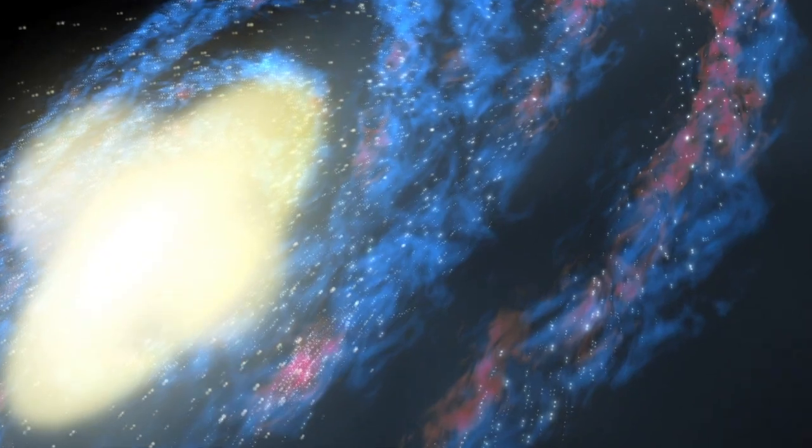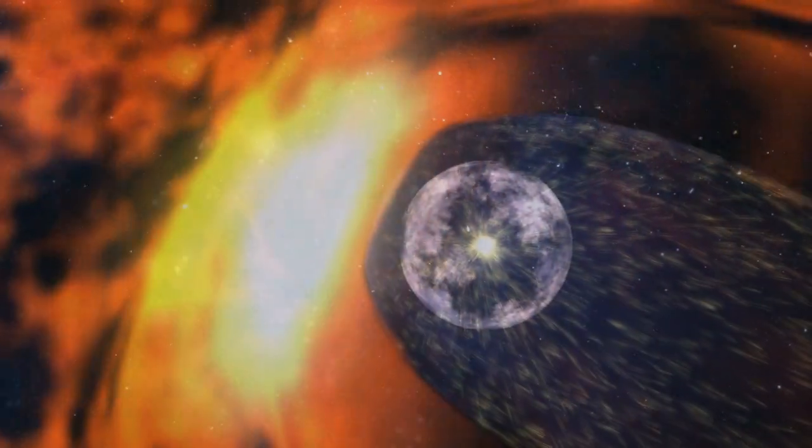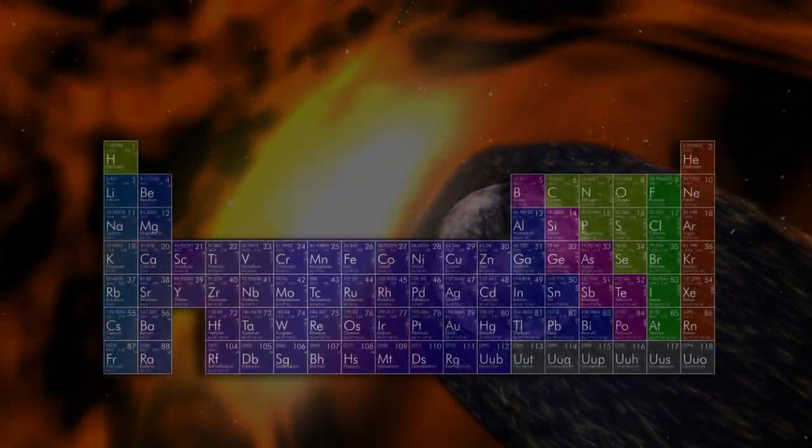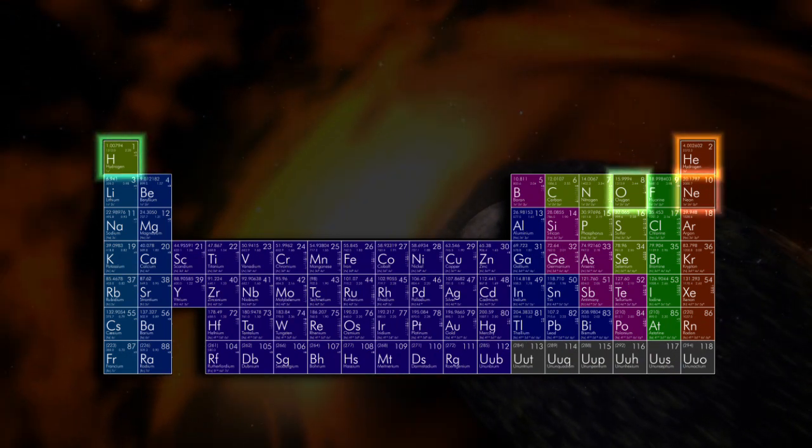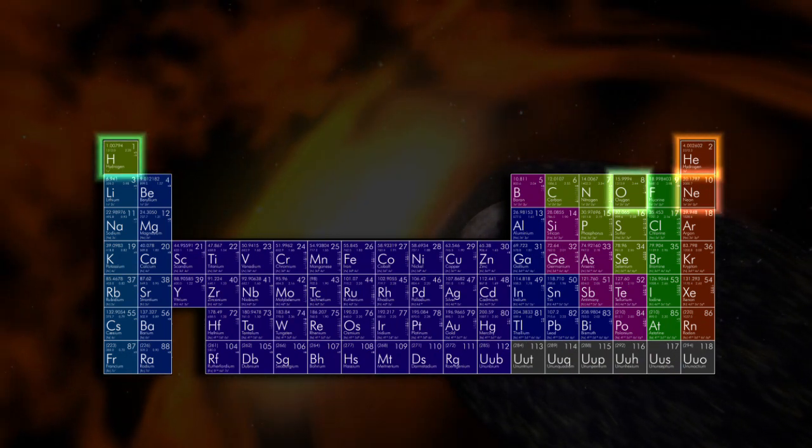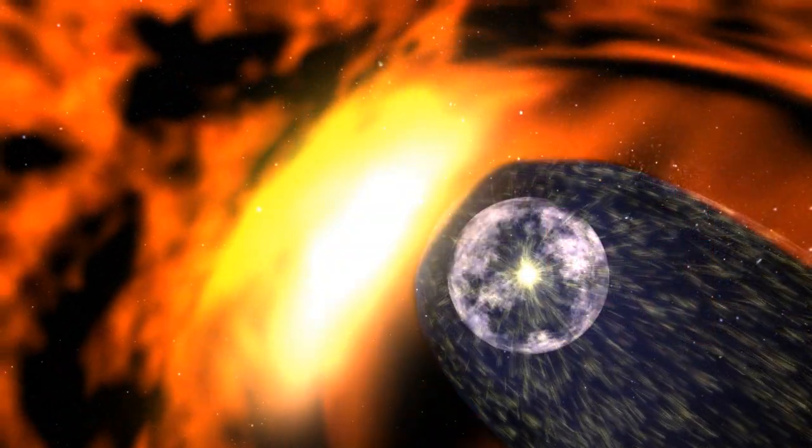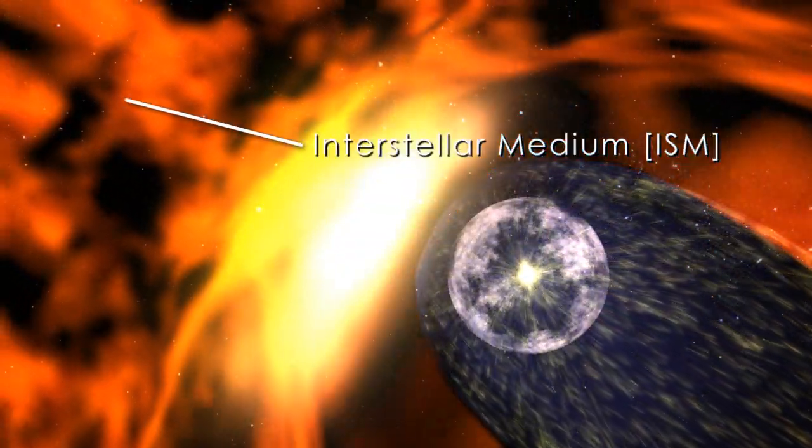Although we can't feel it, our solar system is constantly being changed by galactic wind. The wind is composed of gases like hydrogen, helium, oxygen and neon, which form a very wispy atmosphere between stars. This gas is called the interstellar medium.